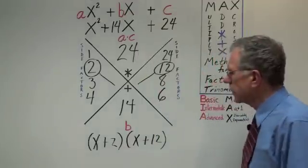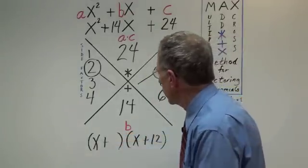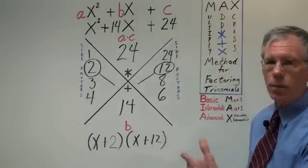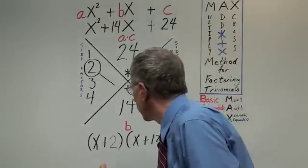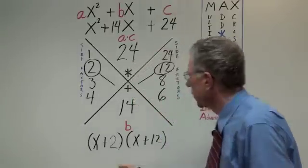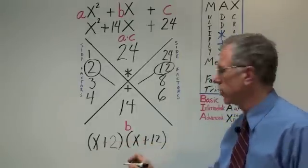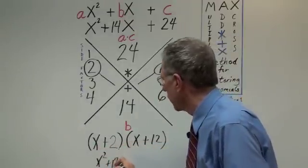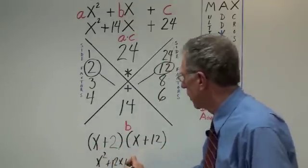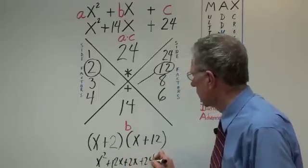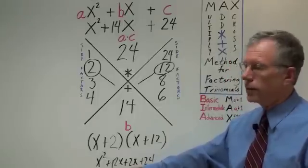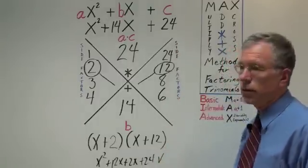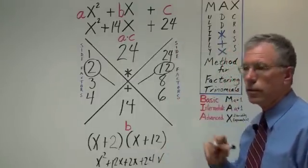Now if you want to check, the way that you would check is to use FOIL. FOIL allows you to multiply binomials, which is what we have here. The first here is x times x or x squared. The outer is x times 12 or 12x. The inner is 2x and the last is 24. Now we know that 12x plus 2x is 14x. So, this is identical to what we started with and we have checked our answer.